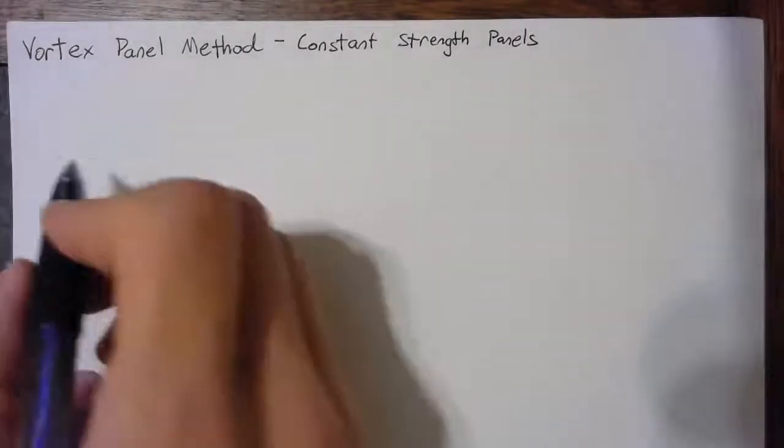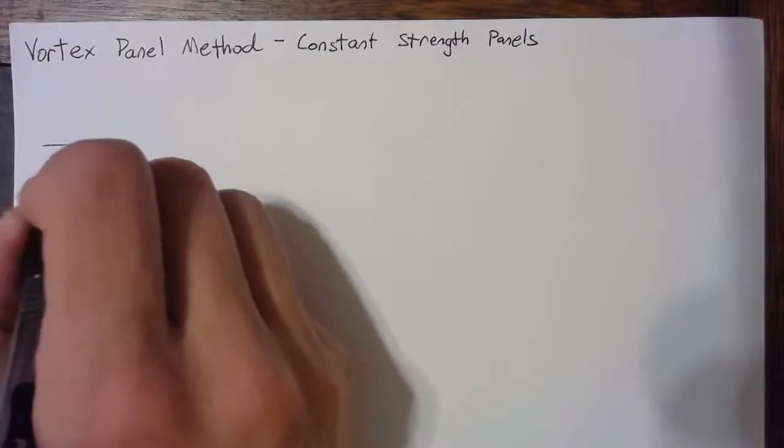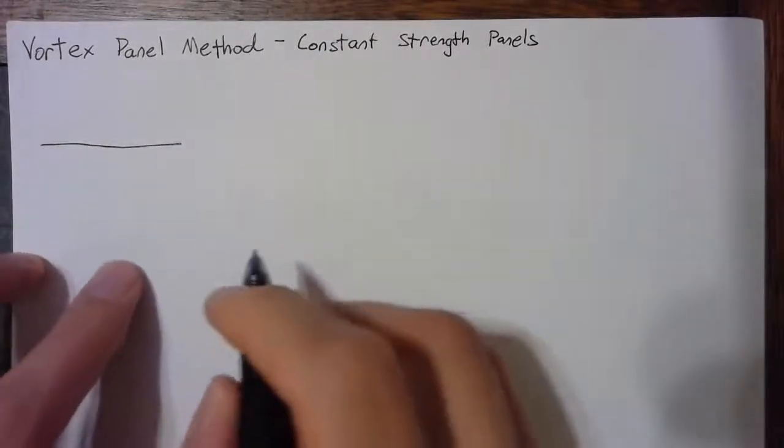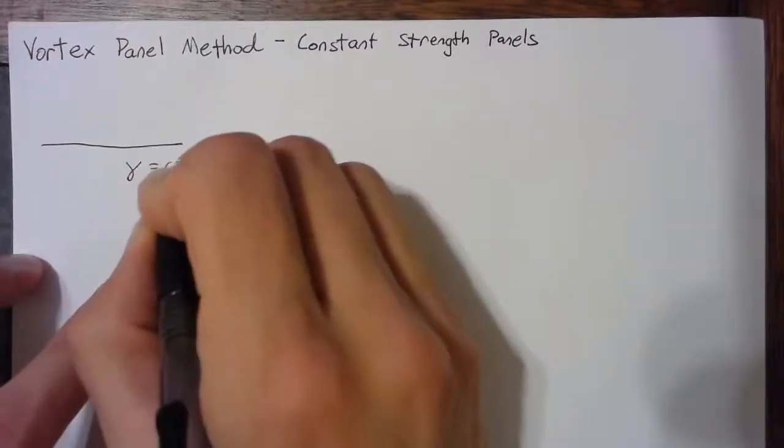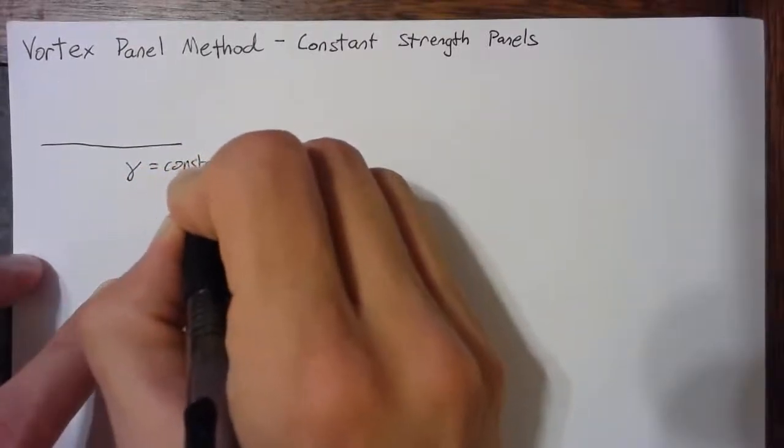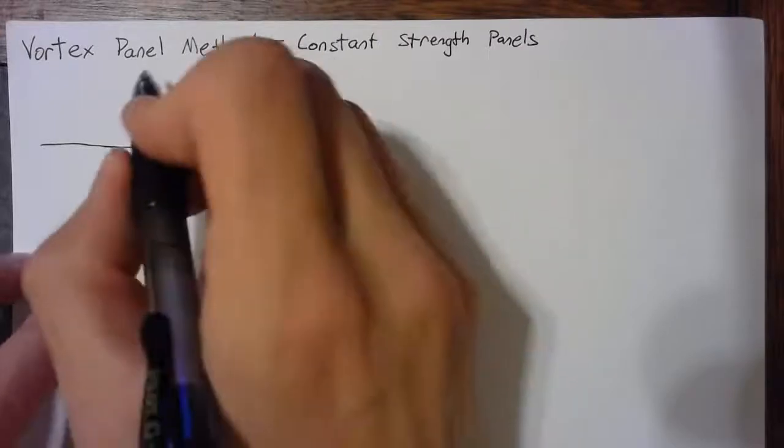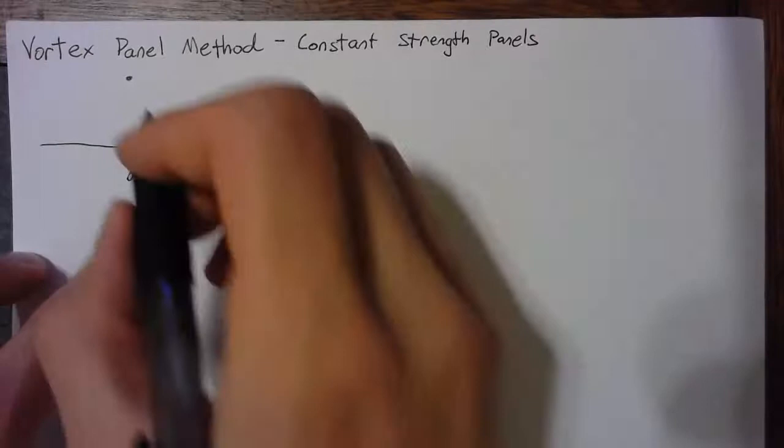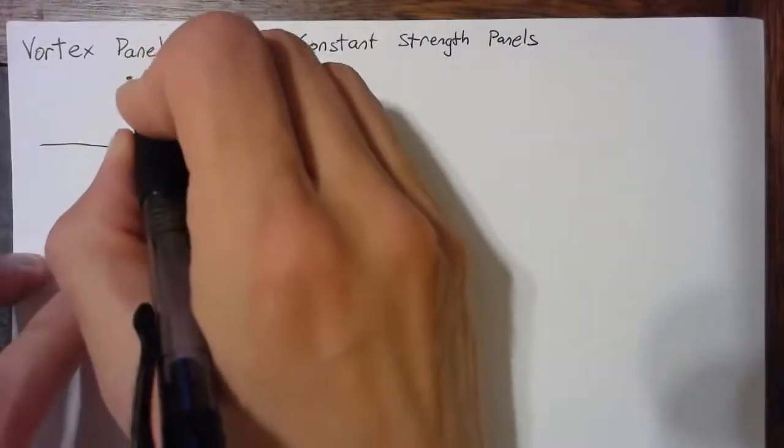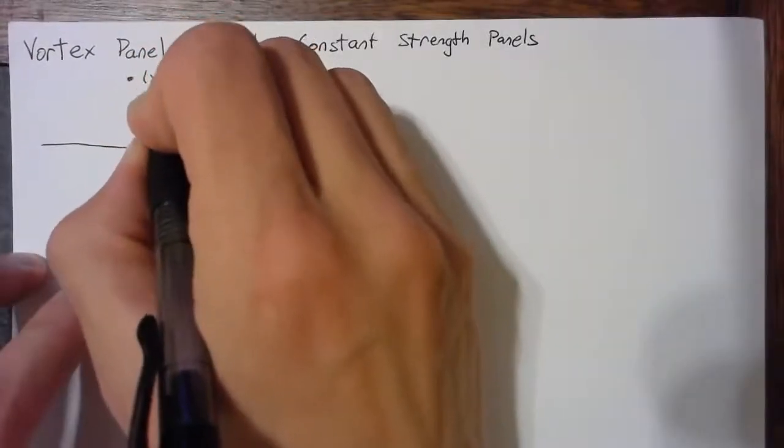What we're interested in here is how a panel of constant strength, meaning that our gamma is a constant along this surface, affects the velocity and the stream function at a point. We'll call this point xy.